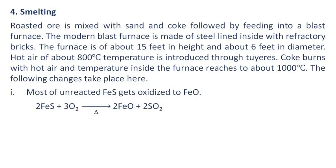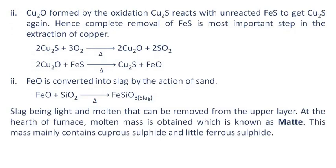Smelting: Roasted ore is mixed with sand and coke, then fed into a blast furnace. The modern blast furnace is made of steel lined inside with refractory bricks, about 15 feet in height and 6 feet in diameter. Hot air at about 800 degrees Celsius is introduced through tuyeres. Coke burns with hot air and temperature inside the furnace reaches about 1000 degrees Celsius. Most of the unreacted iron sulfide gets oxidized to iron oxide. Cuprous oxide formed by oxidation of cuprous sulfide reacts with unreacted iron sulfide to regenerate cuprous sulfide; hence complete removal of iron sulfide is the most important step.